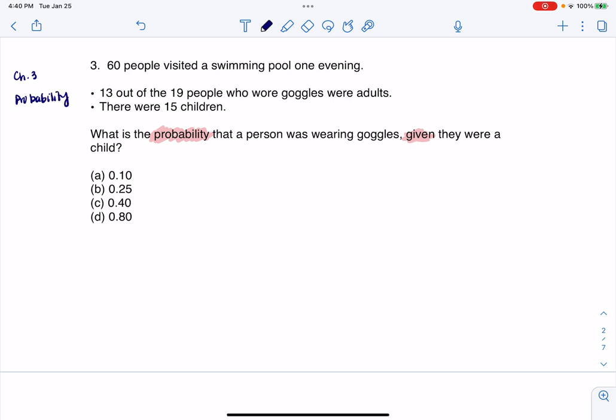And I can see there's a conditional probability because I see the phrase 'given that'. Other phrases I've seen - it could say 'if they were a child' or 'of the children, what's the probability that the person was wearing goggles?'